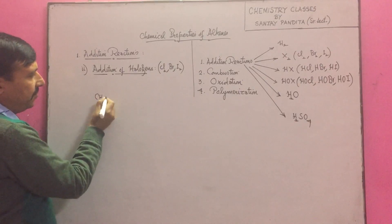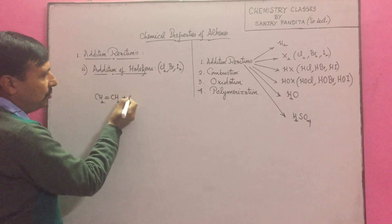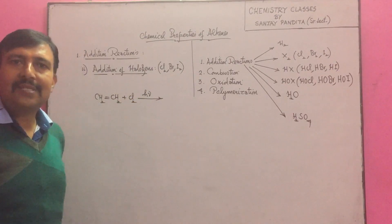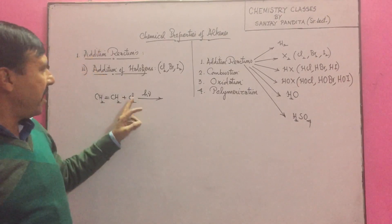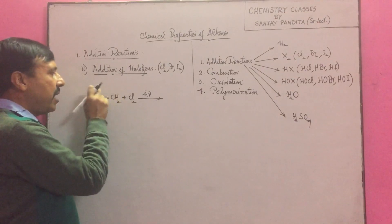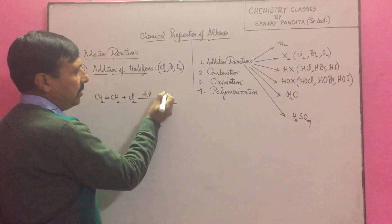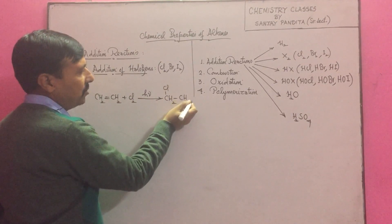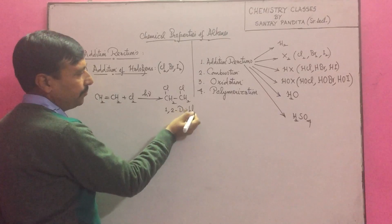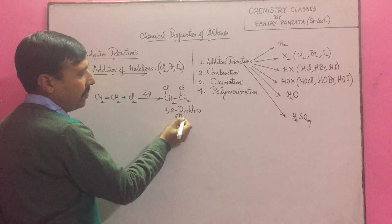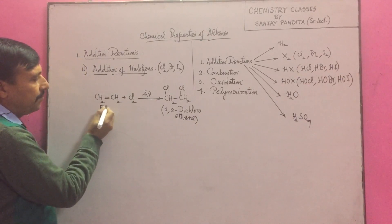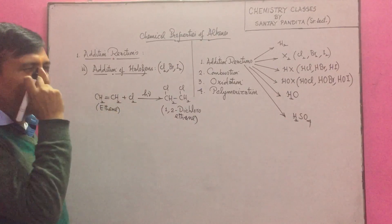We take ethene — CH₂=CH₂ — and add chlorine in the presence of sunlight. Why sunlight? Because in sunlight we get free radicals, and it proceeds through a free radical addition mechanism. Cl free radicals are formed and add across the double bond. One Cl goes to one carbon and one Cl to the other, and we get 1,2-dichloroethane.